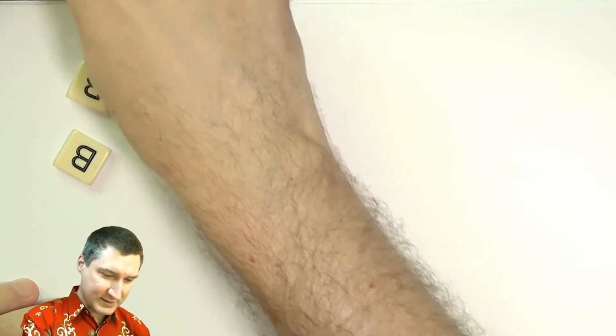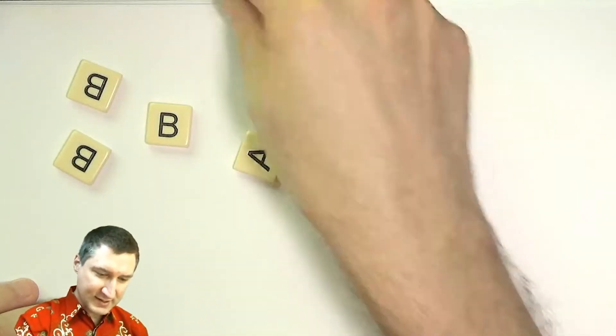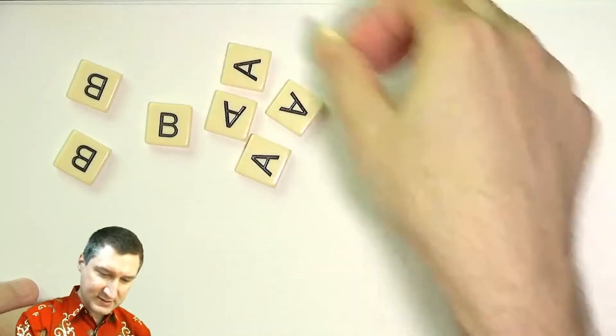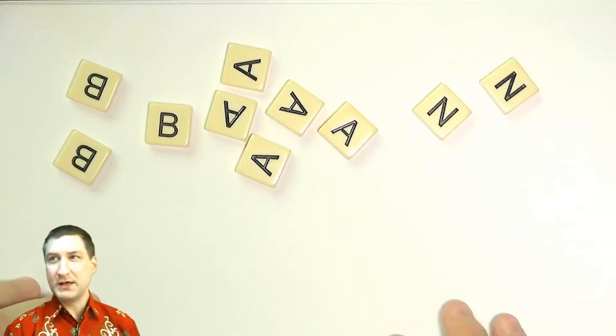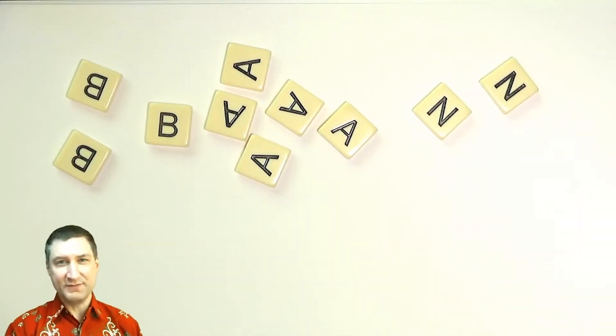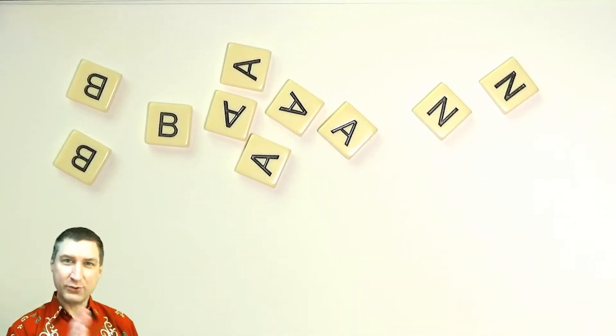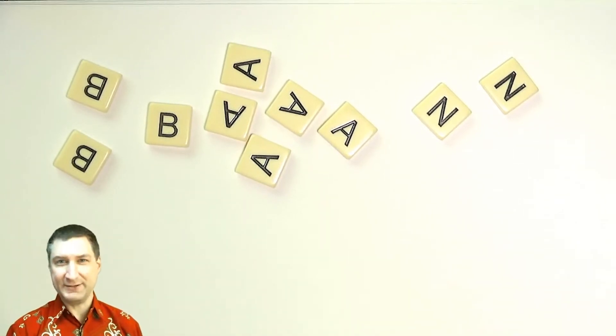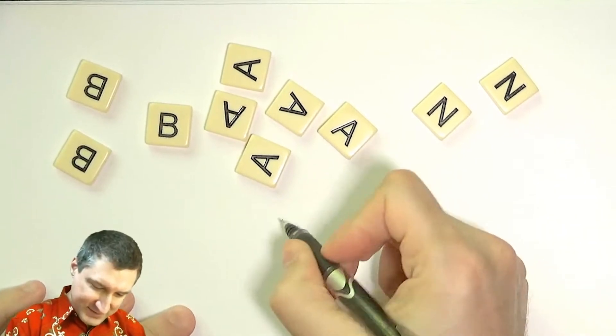To reinforce some concepts from the last lecture, I want to do a few examples with combinatorics and probability. The first one: suppose I've got a bag full of tiles with letters on them — some B's, some A's, and a couple of N's. A monkey is going to pull six tiles out of the bag, and I want to know what's the probability that in order those tiles spell 'banana'.